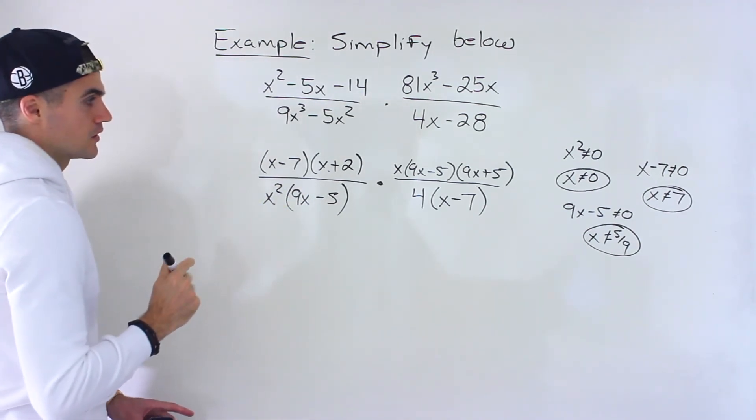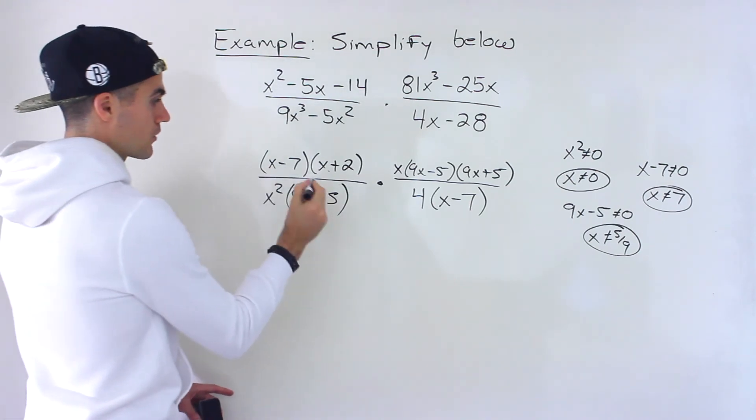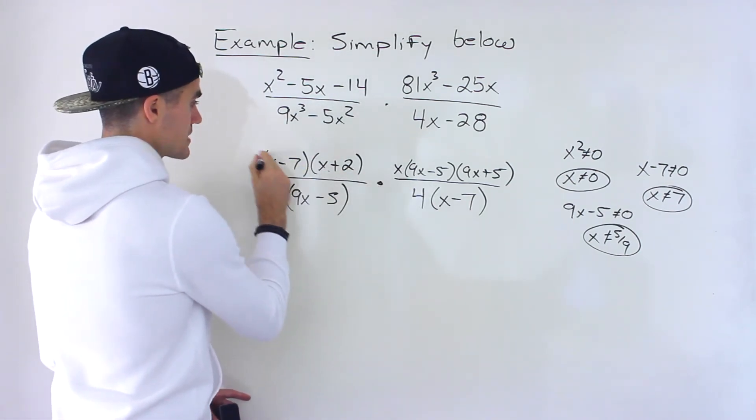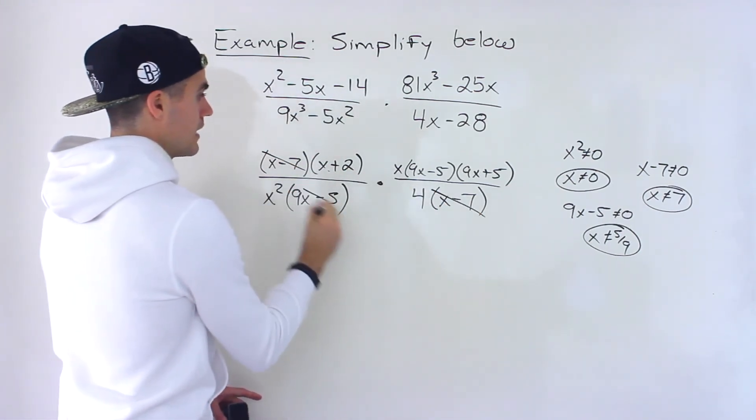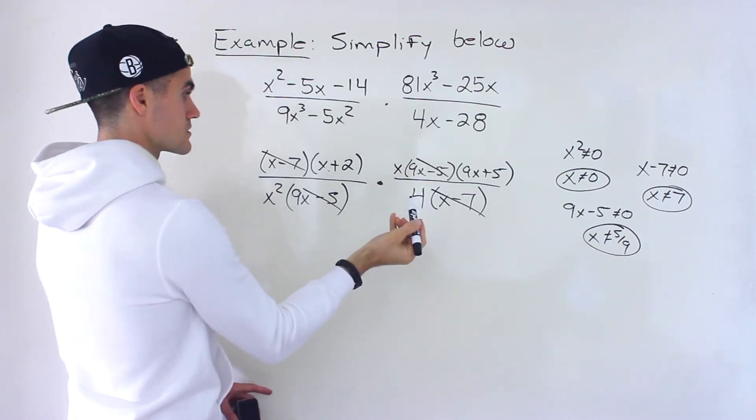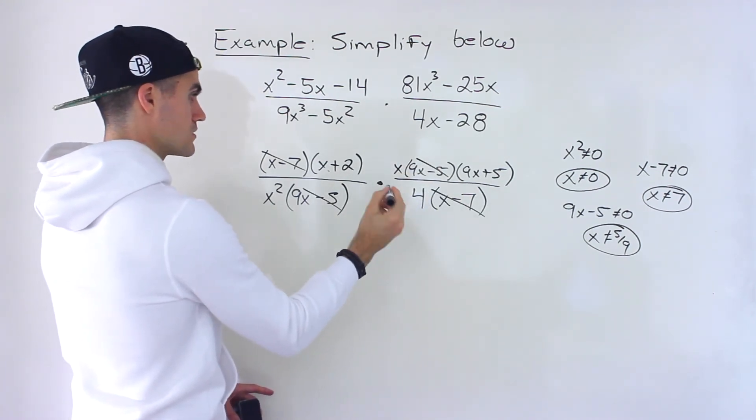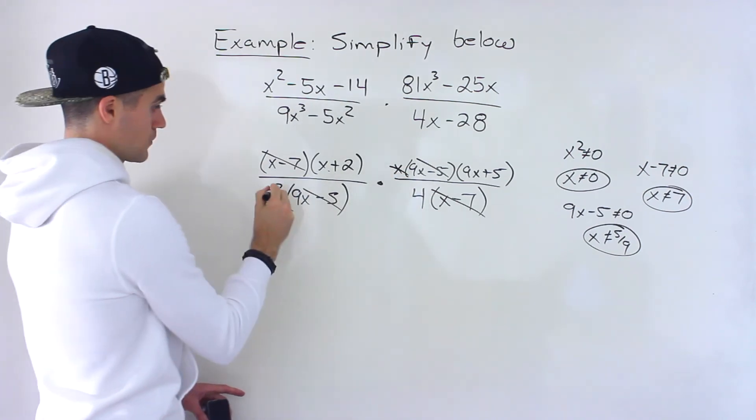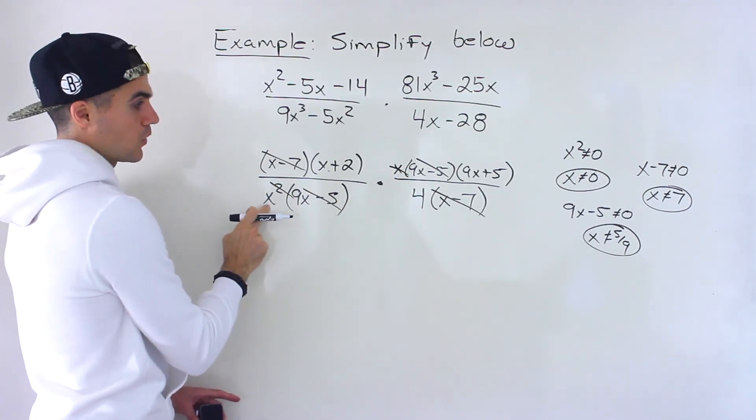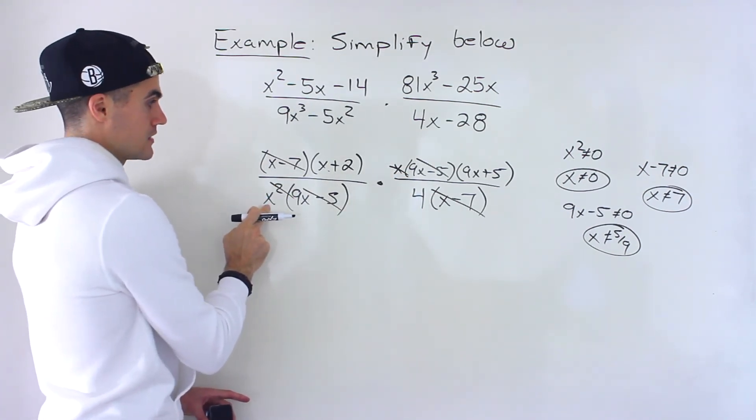And then from here, you can just simplify by crossing stuff out. So notice the x minus 7s cancel out. 9x minus 5 cancels out. And then also notice that one of these x's and one of these x's cancel out. So there's one more x left in the denominator.